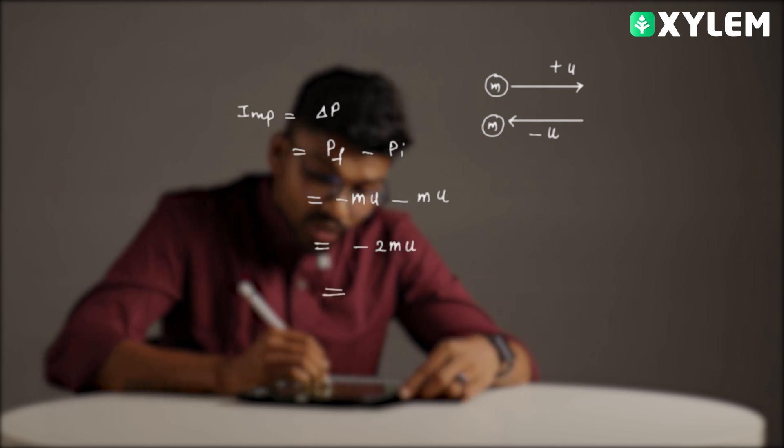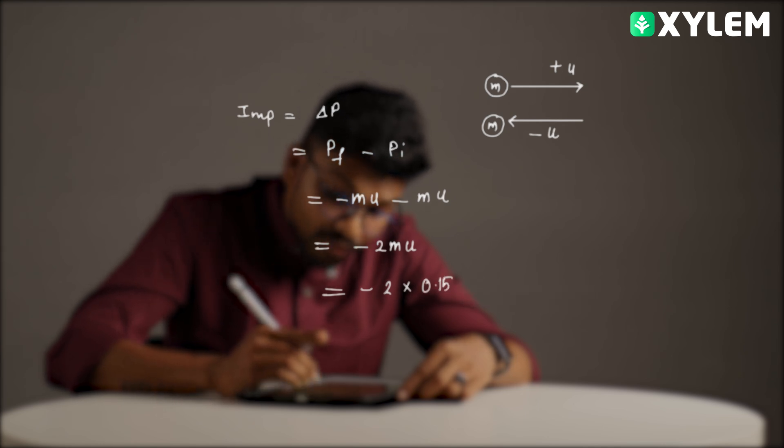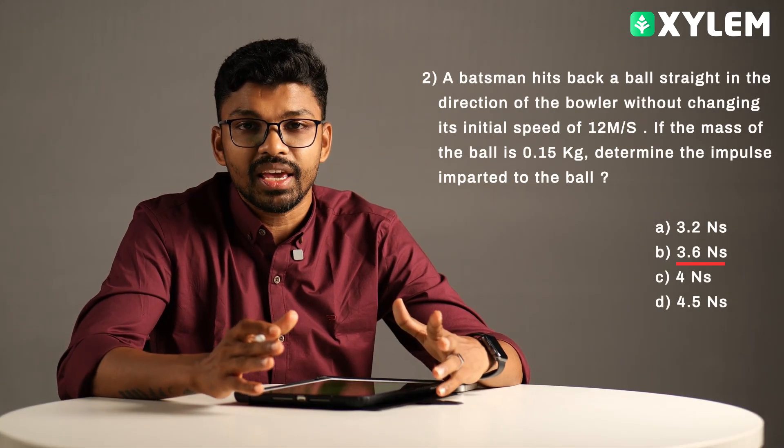So final momentum is minus mu. Final momentum minus mu minus initial momentum again minus mu, so minus 2 mu. So we have minus 2 into m, we have 0.15 into u that is 12. So we have to get the final answer is 3.6 newton second. Very simple, option B. Pick it. So we have two questions solved, which is all right.